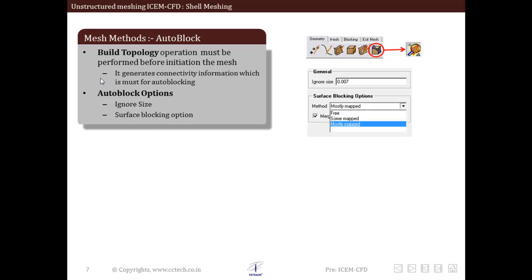The second option is surface blocking option. Surface blocks once created can be meshed using different algorithms. This option provides flexibility to control this procedure. Methods that are available are free, some mapped, and mostly mapped. We can see this in the surface blocking options within the method drop-down section. The mostly mapped option works well as it will produce mapped mesh whenever possible, and with complex shapes it will produce free mesh.